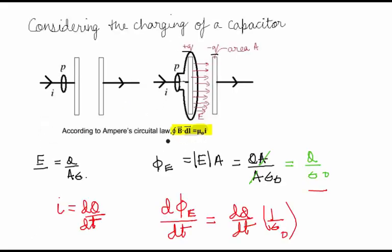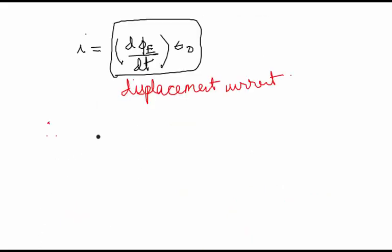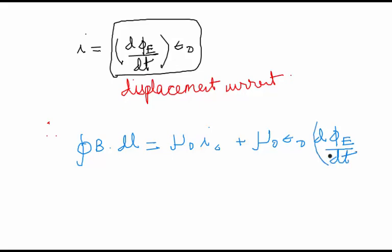We knew this was Ampere's circuital law. The modification we will do is simple: ∮B·dl = μ₀i_c + μ₀ε₀(dΦ_E/dt). This is the term we have added to Ampere's circuital law, which is the displacement current. This will be the answer to our question.